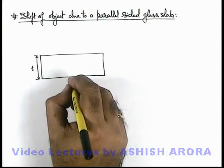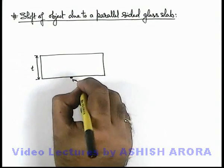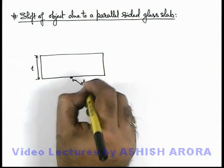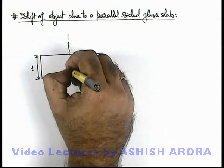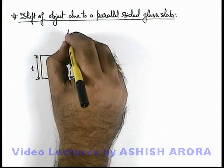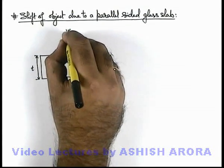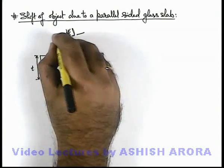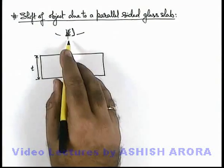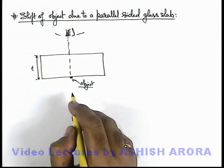At one face of this glass slab, an object is placed which is viewed from the other side by an observer who is looking at the object along the line of near normal incidence.